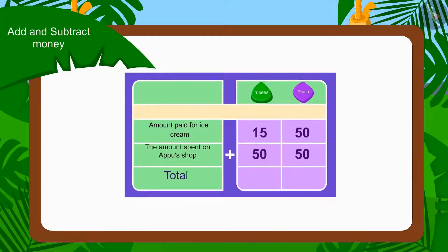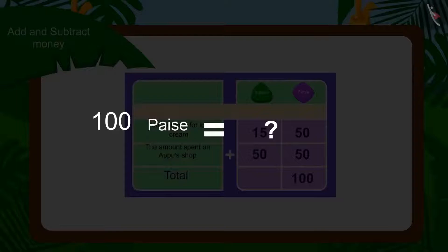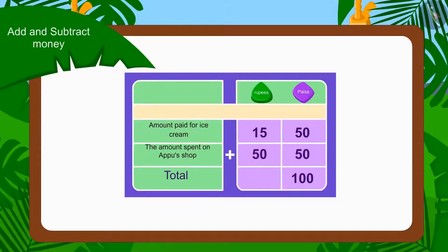First, we will add the numbers written in paise. By adding 50 and 50, we get 100. Can we write 100 paise here? No. So what should we do? Kids, do you remember how much 100 paise is worth? Right — 1 rupee. Therefore, we will write 100 paise as carry over in the rupees column.